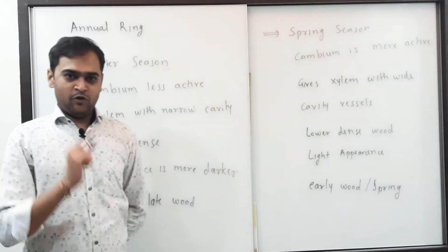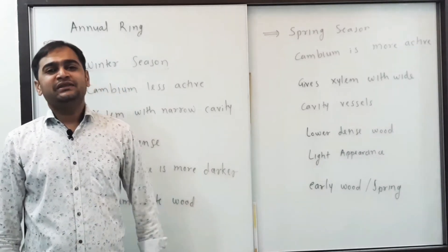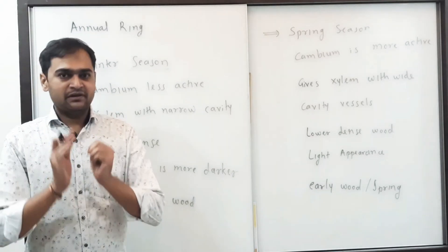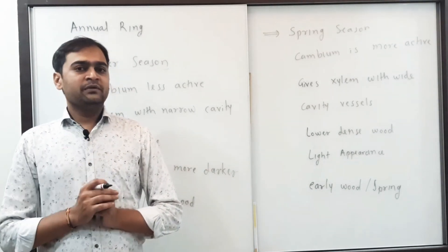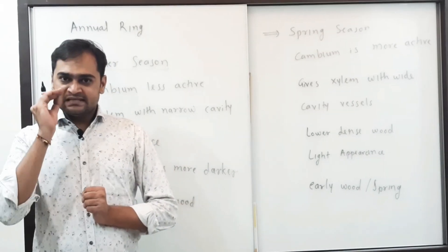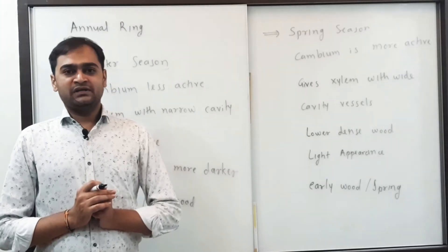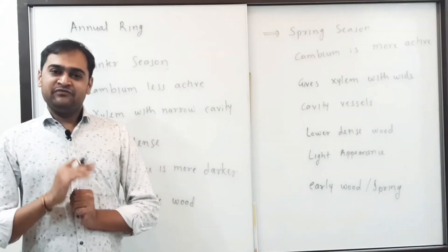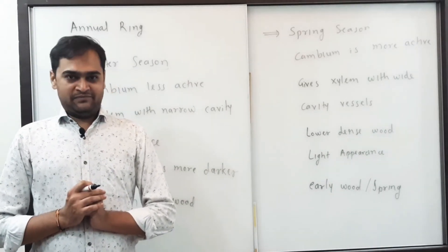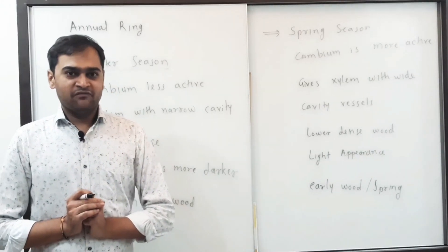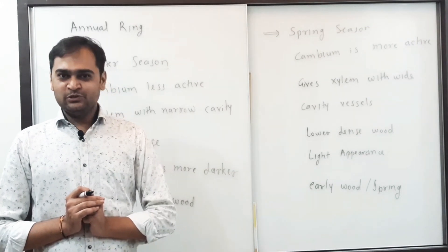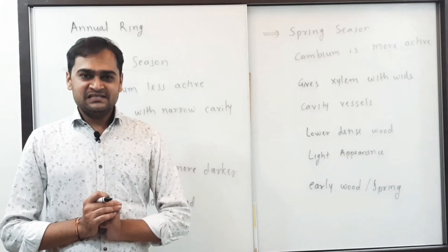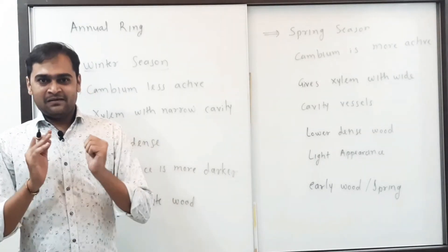One important clarification: 'wood' here is not the common meaning — wood is the scientific term used for xylem. Xylem is a vascular tissue, different from phloem. Both xylem and phloem are formed from the vascular cambium, which is part of the lateral meristem — the stem cells of the plant.